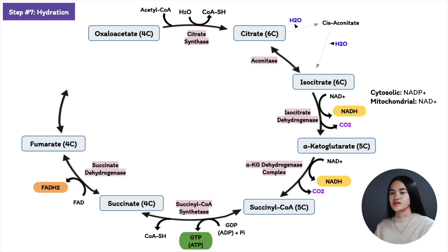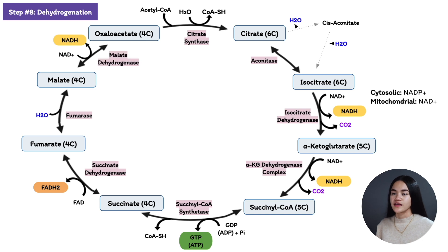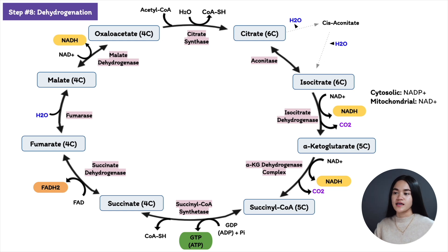Step seven is a reversible hydration of fumarate to malate, catalyzed by fumarase. Then in step eight, malate is oxidized to oxaloacetate by malate dehydrogenase, and NAD⁺ is reduced to NADH. This NADH carries its electrons to the respiratory chain. Oxaloacetate can then condense with acetyl-CoA again to form citrate, restarting the cycle. Because oxaloacetate concentration is very low, the exergonic first reaction helps drive the cycle forward.